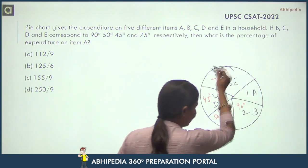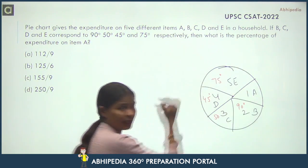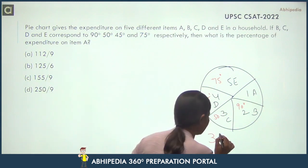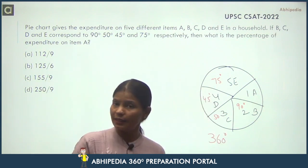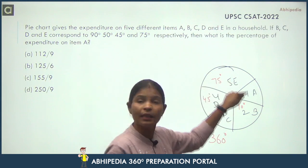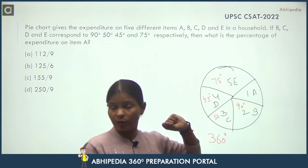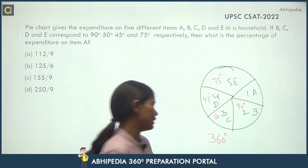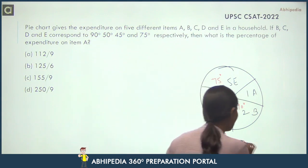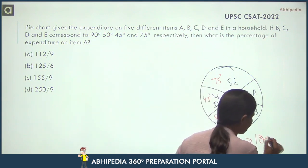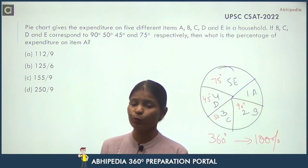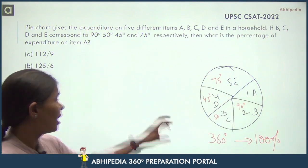Then you should know ki jo complete pie chart hai, this complete pie chart represents 360 degrees when represented in angles. And when we represent it in percentage, in that case this represents complete 100 percent. Ye itna sa point hai — if you know this point, then you can easily do this question.